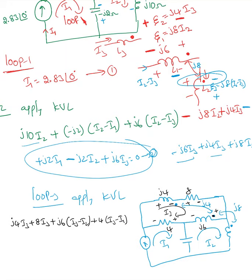Because of the current flowing in L1 (which I labeled earlier), there is an induced EMF across L3. The current I'm assuming there is (I3 − I2). So I3 − I2 is entering the dot, meaning the dotted terminal must be positive and negative. That induced value is j4 — the mutual inductance — times (I3 − I2).